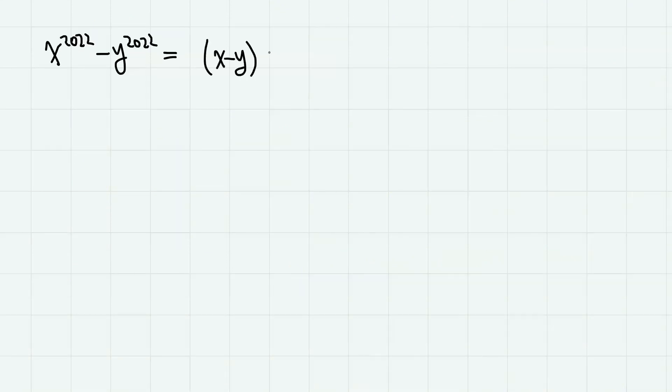We have x minus y, x plus y, x to the power of 674 plus x to the 337 times y to the 337 plus y to the 674, x to the 674 minus x to the 337 times y to the 337 plus y to the 674.